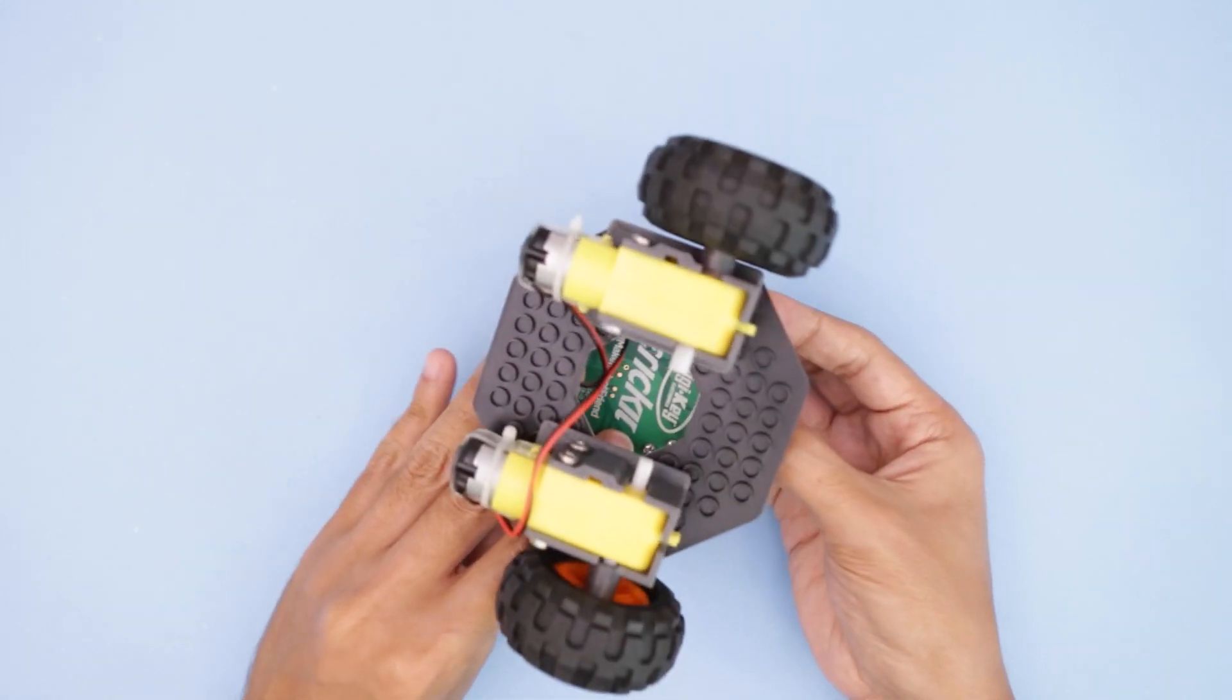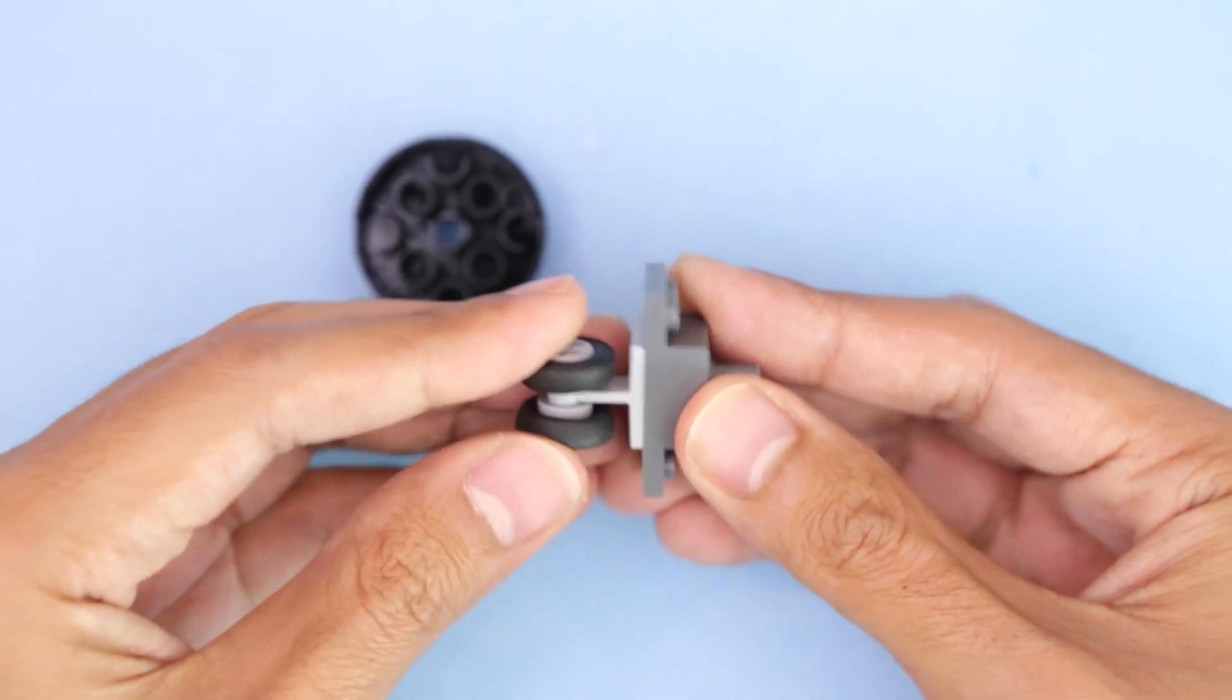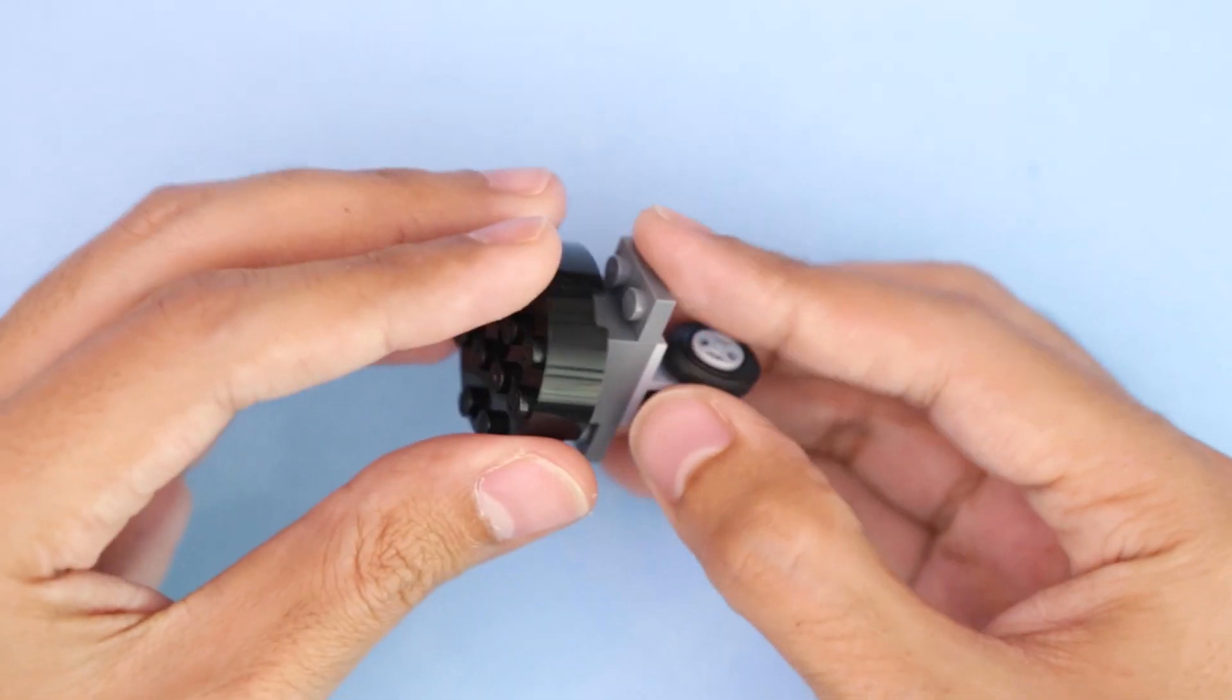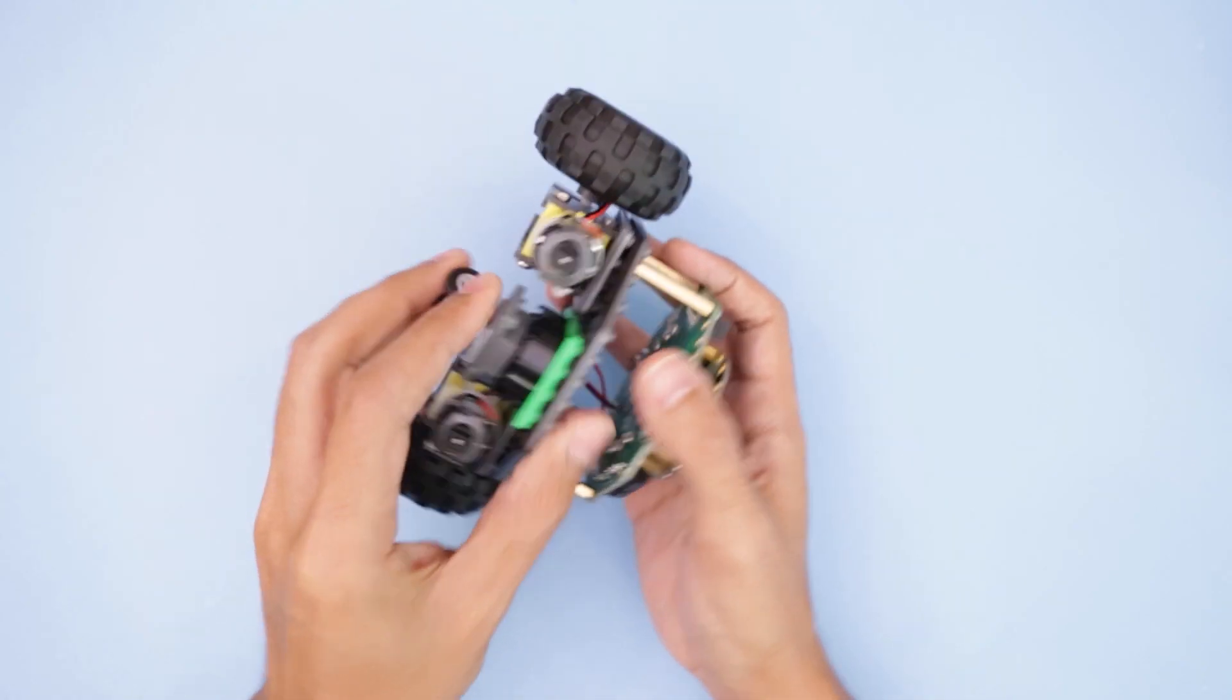Next, we'll need to create a caster wheel to balance the rover. These Lego pieces snap fit together to create a swivel wheel commonly used in Lego airplane builds. Now we can press fit the caster to the bottom of the base plate.